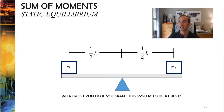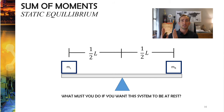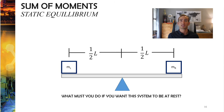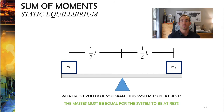Let's look at some simple examples. With two blocks on a seesaw, each one-half the distance L from the pivot point, force times distance tells us that if the distances are both the same, the forces must be the same. Therefore, the mass or weight of both blocks has to be equal in order for the seesaw to balance. That's the sum of the moments equation — counterclockwise moment from the left box minus the clockwise moment from the right box.